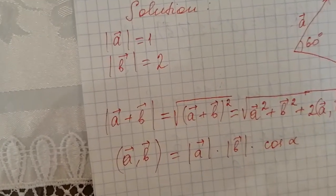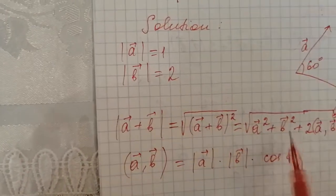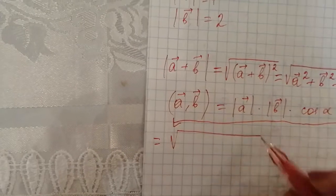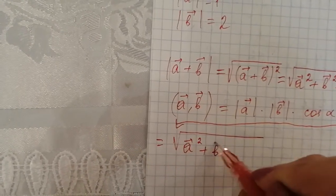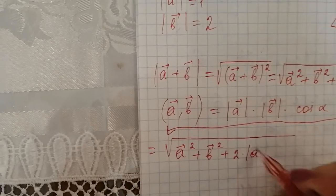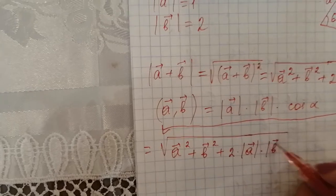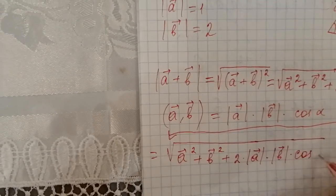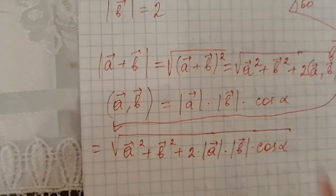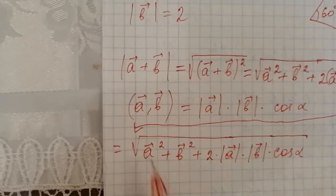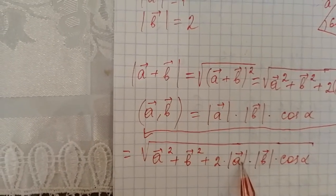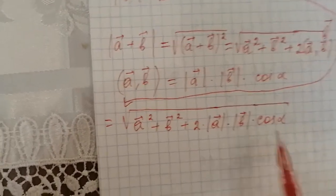Now this is equal to the square root of |A|² plus |B|² plus 2 times |A| times |B| times cosine alpha, where alpha is the angle between vectors A and B.